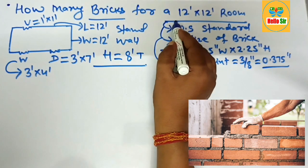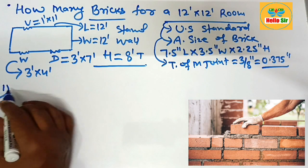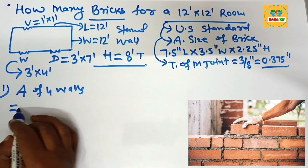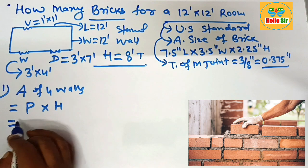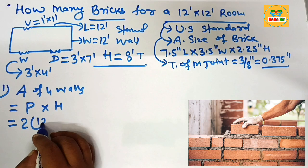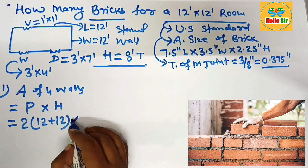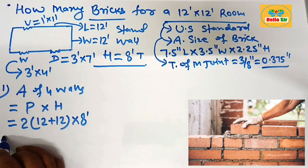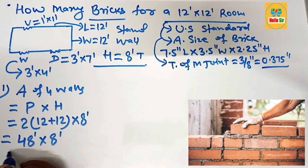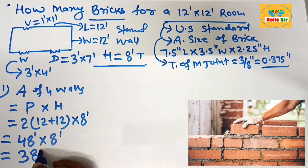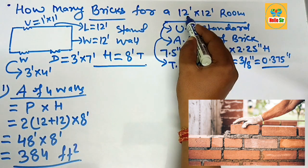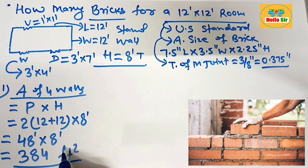To figure out the number of bricks, first calculate the area of 4 walls by multiplying the perimeter of the wall by the height of the wall. The perimeter is the sum of length and width: 12 foot plus 12 foot equals 48 foot. Multiplied by the wall height of 8 foot, this gives 384 square foot. The total area of 4 walls of a 12 by 12 foot room is 384 square foot.